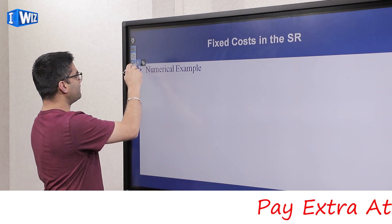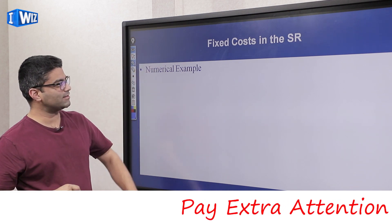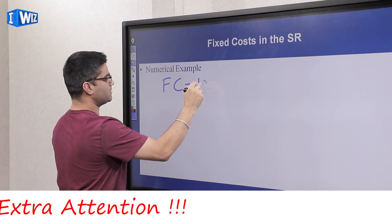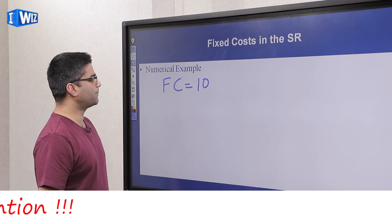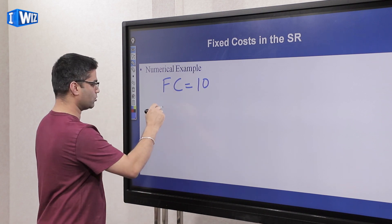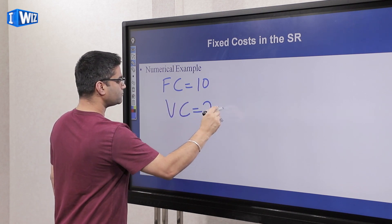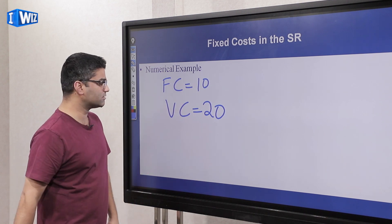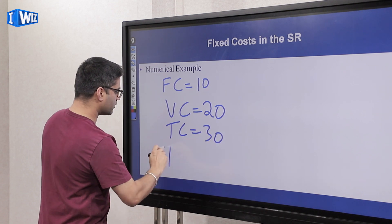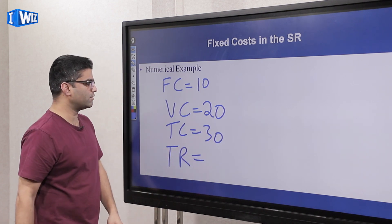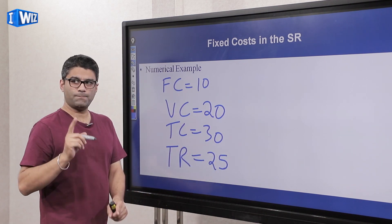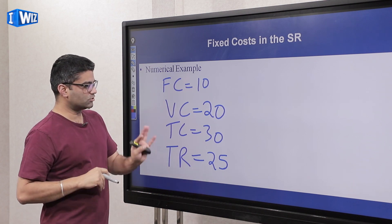Let's do a numerical example. Let's say fixed cost for this producer is $10 — that's your lease on the land regardless of what you produce. Variable cost is $20 — that's the cost of your labor and raw materials. Total cost is therefore $30. If total revenue is $25, pause the video and answer this question: should you produce or not?